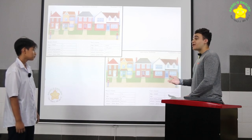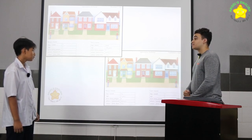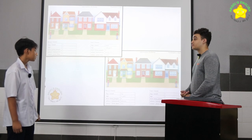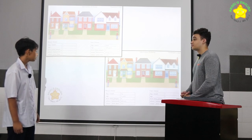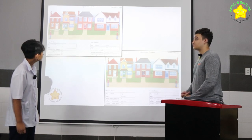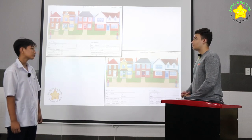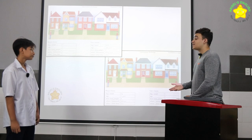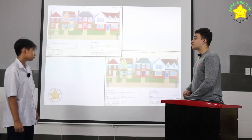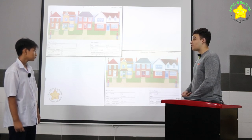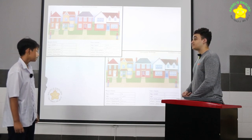How old is Mary's house? It's five years old. How old is Tom's house? Tom's house is a hundred years old. How many people live in Mary's house? There are eight.